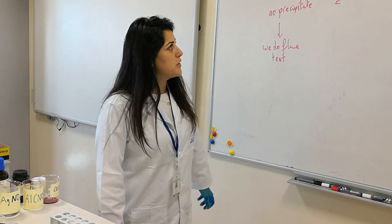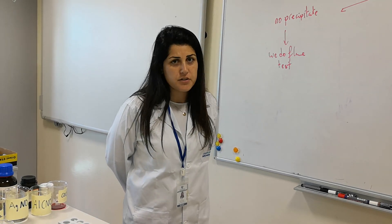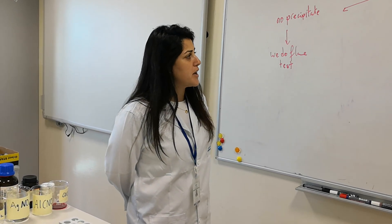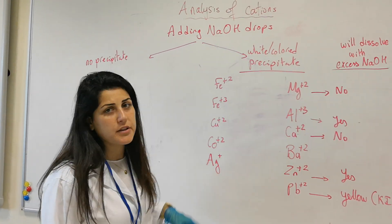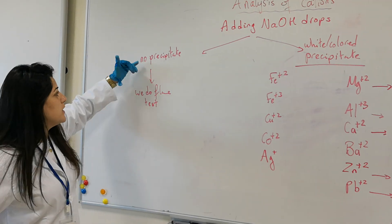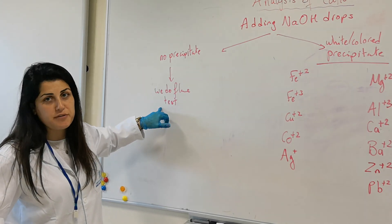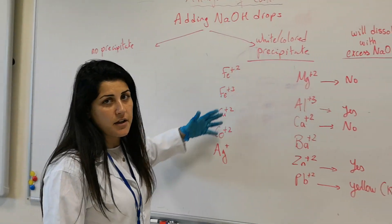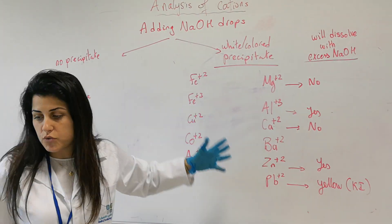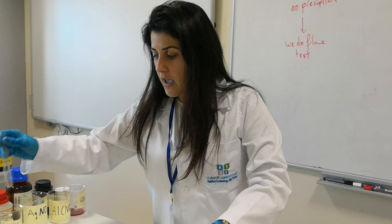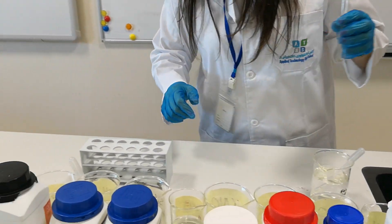In today's experiment we are going to do a qualitative analysis for the cations. Anytime I have a cation solution, the best way to identify them is to add sodium hydroxide drops. Some cations will not form a precipitate, so we will identify those by doing the flame test. Other cations will form a white precipitate or a colored precipitate. I'm going to take a sample from a different cation every time and add sodium hydroxide to it.